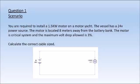We are going to start looking at volt drop. Within an exam paper you'll get a question — they can be quite wordy — so what we need to do is read the question, break it down, and establish what we need to do. You are required to install a 1.5-kilowatt motor on a motor yacht. The vessel has a 24-volt power source. The motor is located eight meters away from the battery bank. The motor is a critical system and the maximum volt drop allowed is 3%. We need to calculate the correct cable size to maintain that maximum 3% volt drop in that circuit.